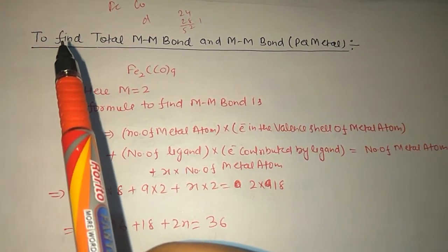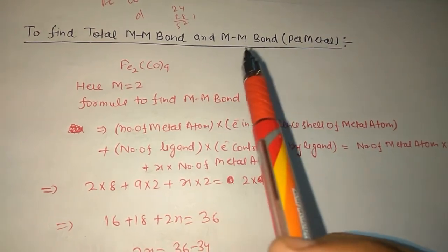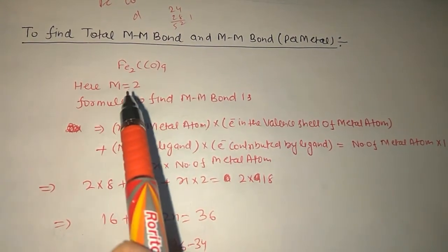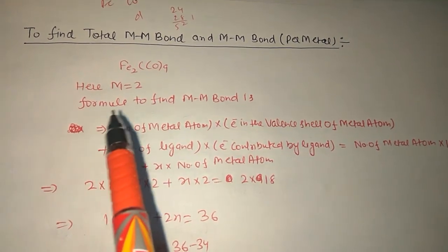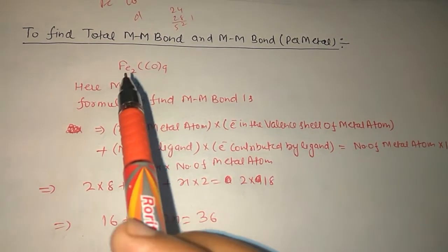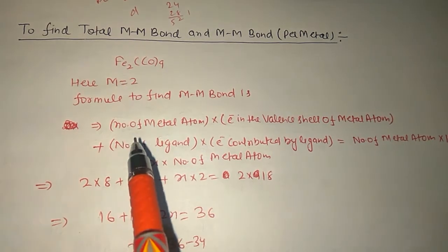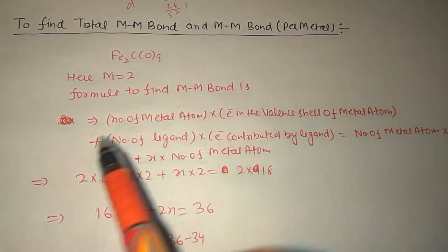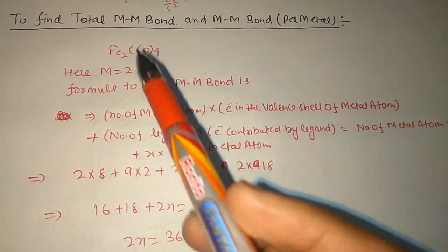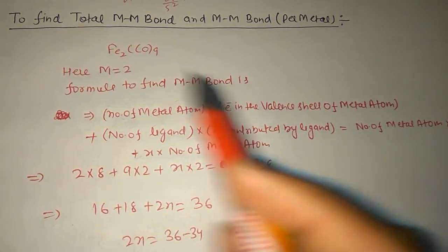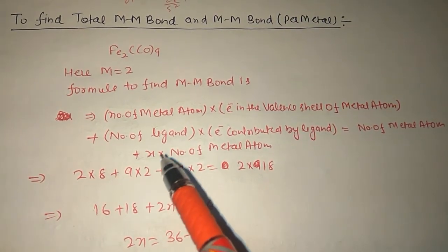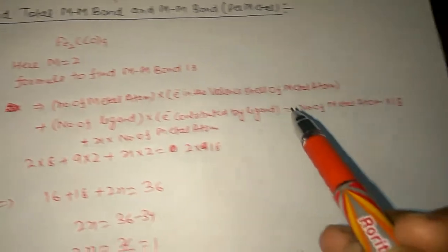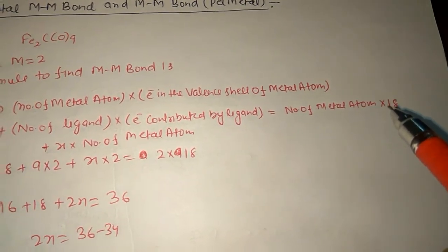Today we will discuss an important method to find the total metal-metal bond and metal-metal bond per atom or per metal. Consider the example Fe₂(CO)₉, where the number of metal atoms is 2. The formula is: (number of metal atoms) × (electrons in valence shell) + (number of ligands) × (electrons contributed by ligand) + X × (number of metal atoms) = (number of metal atoms) × 18, where X is the number of metal-metal bonds per atom.